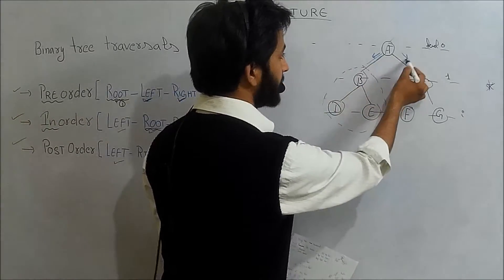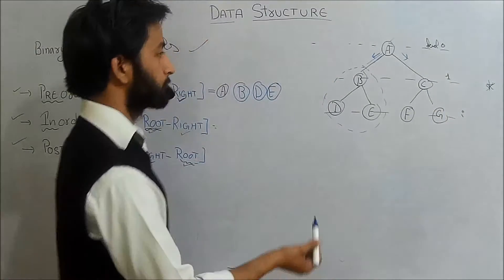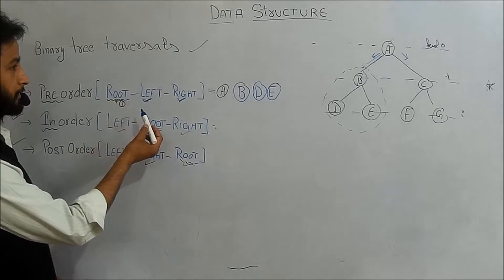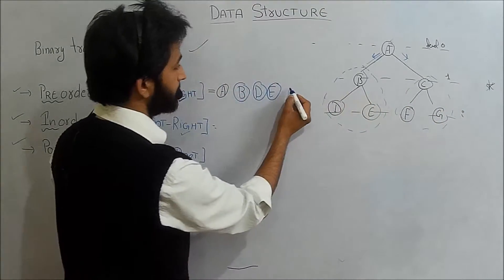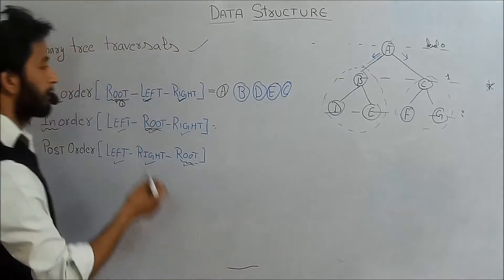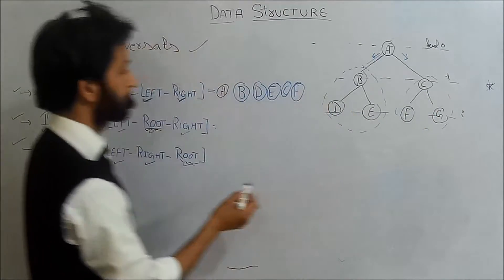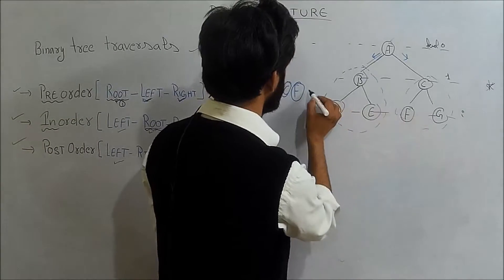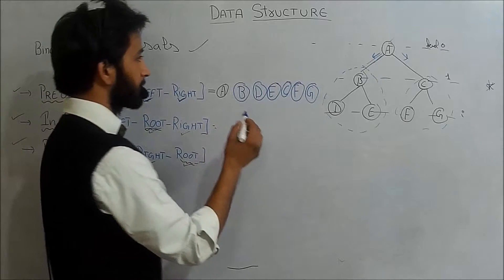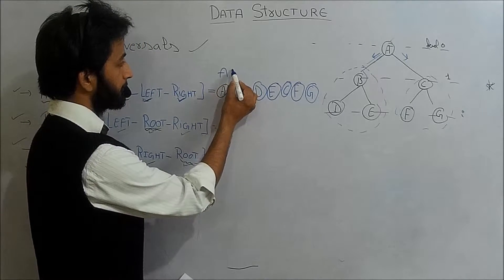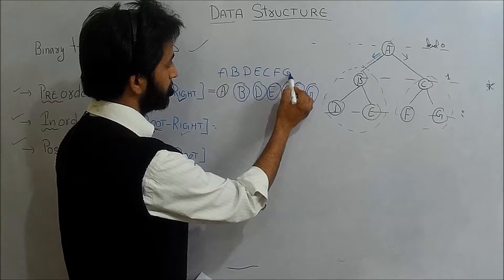Then we move to the right side. In the right subtree, we have C, F, and G. Applying pre-order, the root of that subtree is C, then its left child F, then its right child G. So the pre-order traversal of the given binary tree is A, B, D, E, C, F, and G.